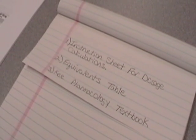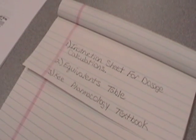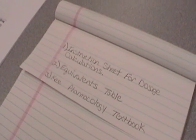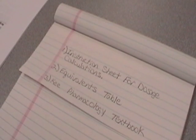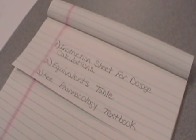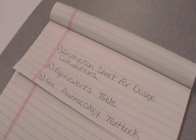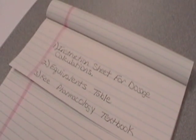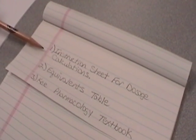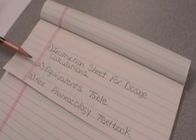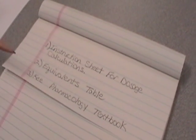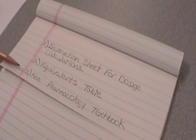You will receive a more detailed instruction over Dimensional Analysis when your RNSG classes begin. To be successful in working these problems, please have on hand your instruction sheet for dosage calculations, your equivalence table, and your key pharmacology textbook.